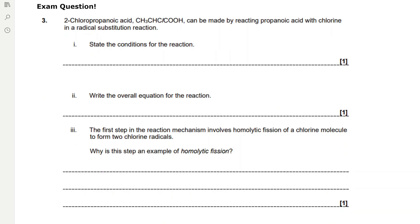Exam question: 2-chloropropanoic acid CH3CHClCOOH can be made by reacting propanoic acid with chlorine in a radical substitution reaction. State the conditions for the reaction. We're going to need ultraviolet radiation.